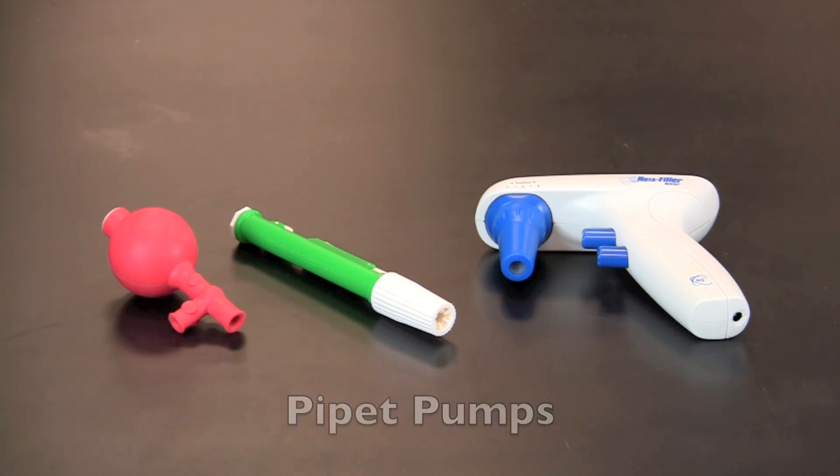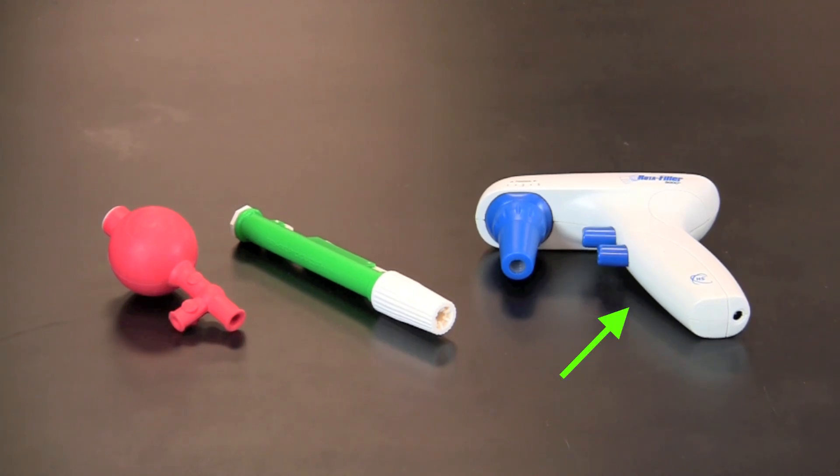Serological pipettes are used with three main types of pipette pumps: the tri-valve, the syringe, and the electronic pump.